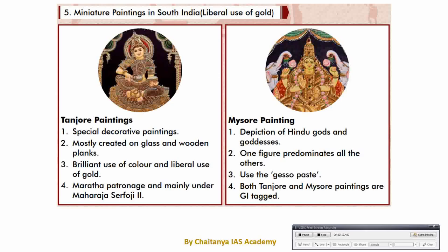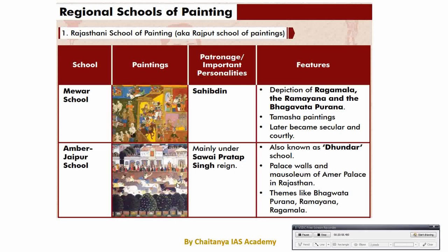In South India, Dravidian style of painting is famous. Tanjore painting and Mysore painting are the two famous ones. In Tanjore painting, special decorative painting has been created on glass and wooden planks; brilliant colors and gold have been used. It is patronized by Maratha and Tanjore kings. In Mysore painting, Hindu god and goddess have been painted, and it is prevalent in Karnataka and Tamil Nadu region.